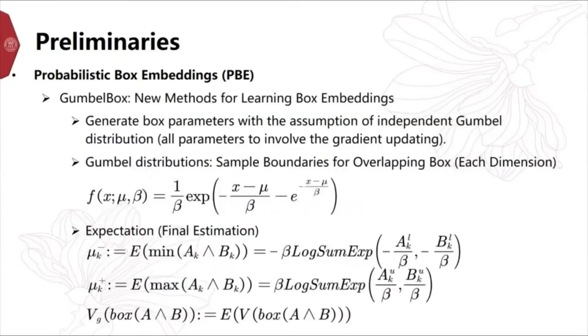Now we introduce the optimization of box embedding. Recently, GumbelBox proposed using GumbelBox distribution to sample and generate box parameters. Make all parameters involve the gradient updating. By computing the expectation of GumbelBox distribution, the final estimation of the bounds of overlapping box can be obtained, and the volume is calculated based on the estimated boundaries.